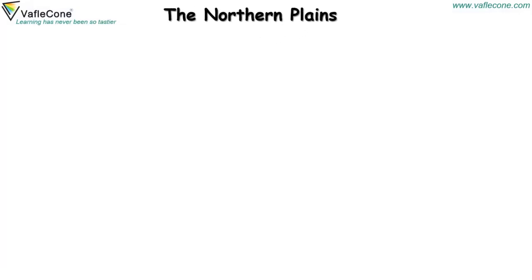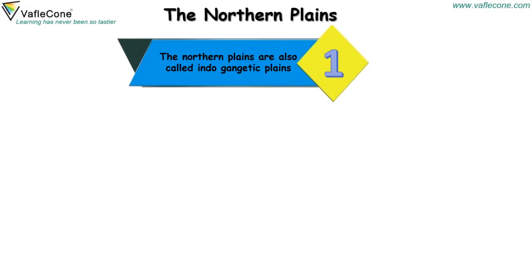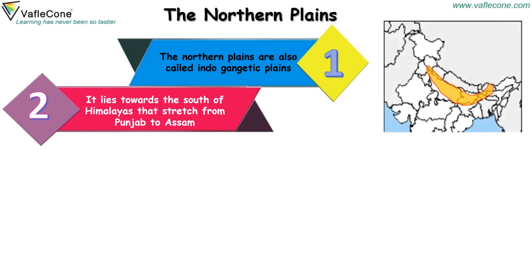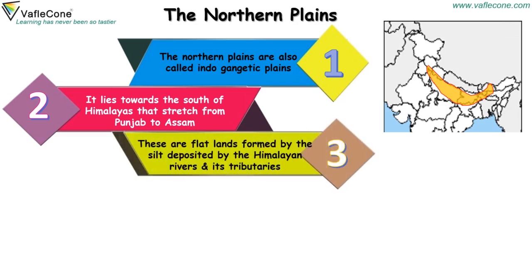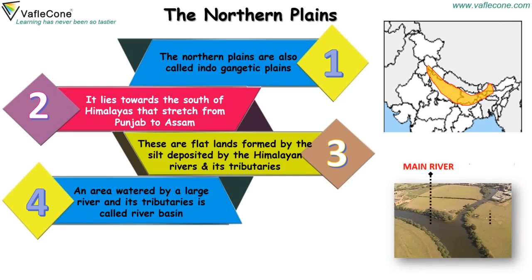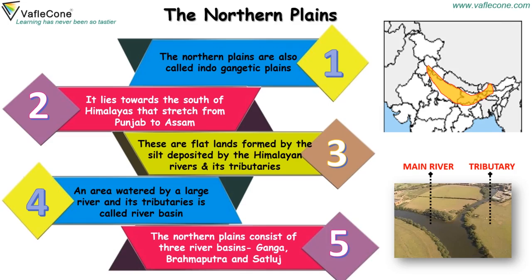The Northern Plains are also called Indo-Gangetic Plains. They lie towards the south of the Himalayas, stretching from Punjab to Assam. These are flatlands formed by the silt deposited by the Himalayan rivers and tributaries. An area watered by a large river and its tributaries is called a river basin. The Northern Plains consist of three river basins: Ganga, Brahmaputra, and Satlaj.